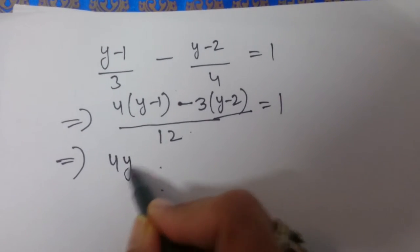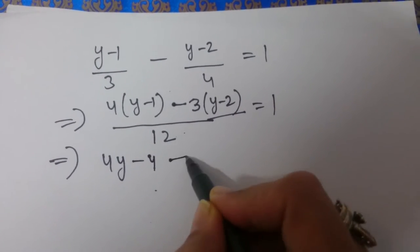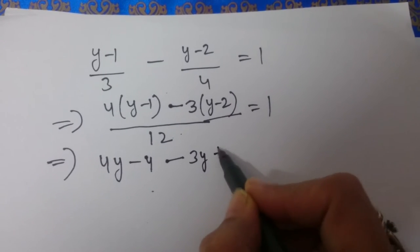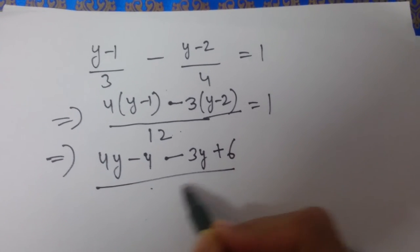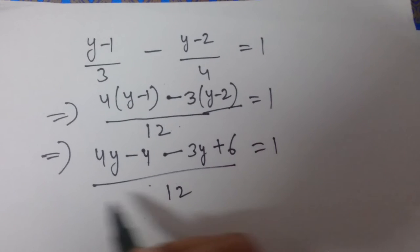This implies 4y - 4 - 3y + 6 divided by 12 equals 1.